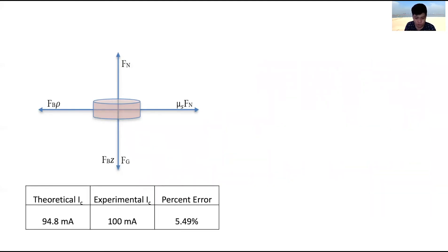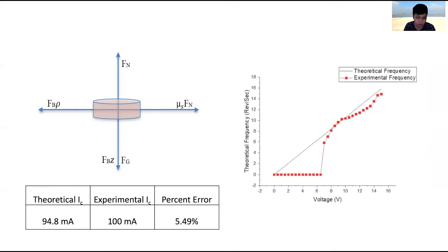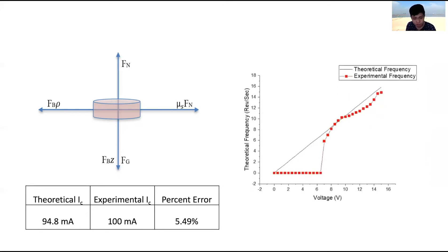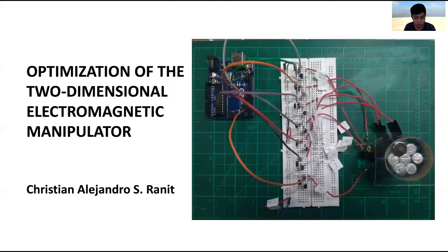We obtained a theoretical minimum current of 94.8 mA, producing an experimental error of 5.5%. To obtain the linear relationship between frequency and voltage in the rotational manipulator, an assumption of frictionless contact was used. The results show that theoretical calculations agree with experimental results for a minimum input of 350 mA for this setup. It has thus been shown that non-contact manipulation is possible using electromagnets as a manageable planar force field and a rotational magnetic influence.